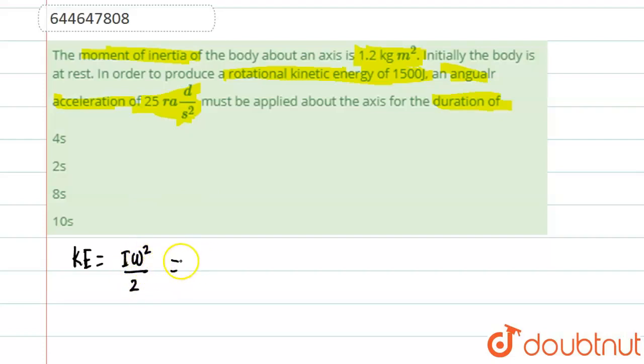So what we are going to write, since everything is given in the question, kinetic energy is 1500. So 1500 will be equal to I omega square, I is given 1.2 into omega square divided by two. So omega square will be equal to 1500, basically 3000 divided by 1.2.